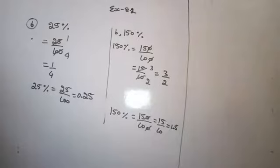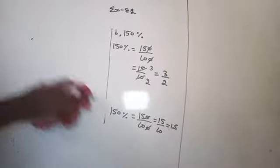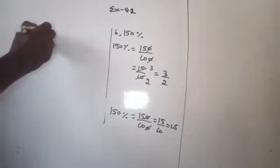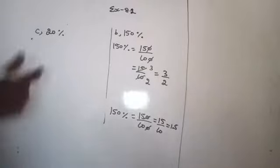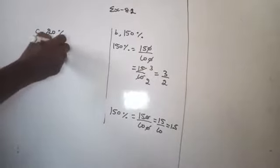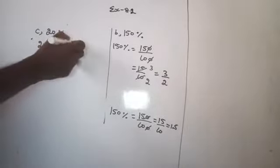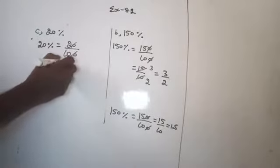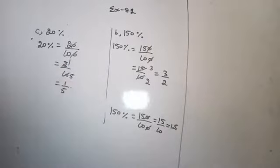Part C: it is given 20%. First, convert this percentage into fraction. 1% means 1/100, so 20% means 20/100. Strike out the equal number of zeros, which gives 2/10. Then 1 two is 2, and 5 twos are 10, which is equal to 1/5. We have reduced it into the lowest form.